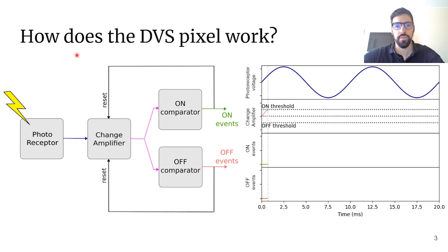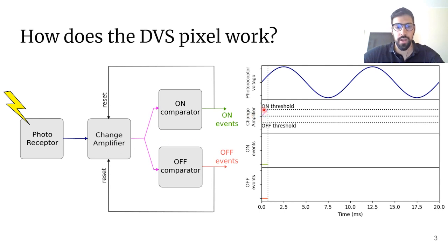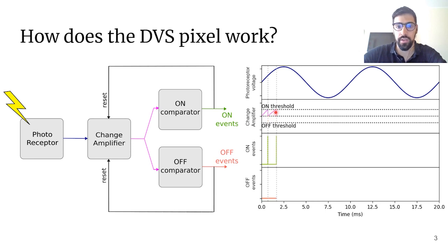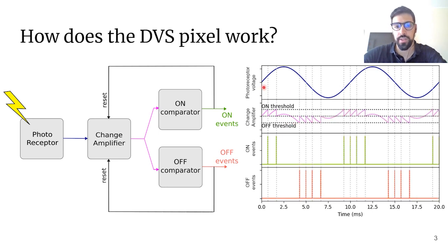To understand this, let's look first at how the DVS pixel works. The first stage of the DVS pixel is a logarithmic photoreceptor. It consists of a photodiode and MOS transistors operating in weak inversion. This causes the output voltage of the photoreceptor to be proportional to the logarithm of photocurrent. This voltage is then amplified by a change amplifier, which first follows the output of the photoreceptor. It is then compared to an on threshold by an on comparator and to an off threshold by an off comparator. When the output of the change amplifier hits the on threshold, it generates an on event and resets the output of the change amplifier. Then the output keeps following the photoreceptor output voltage until it hits the threshold again, triggers an event, resets again, and same thing when it hits the off threshold. This way, changes in relative light intensity in the scene are encoded to streams of on and off events.